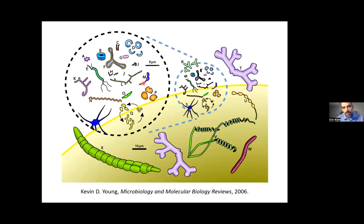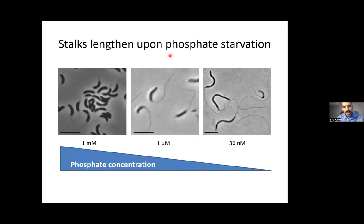We study it because it's asymmetric and it grows a polar stalk appendage. Not only does it grow a stalk appendage, but the length of that stalk is regulated by the availability of phosphate in the environment. Here you can see Caulobacter grown in one millimolar phosphate with a fairly short stalk, and then as you go to one micromolar or down to nanomolar phosphate, the stalk and the cell body get much much longer.